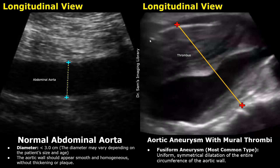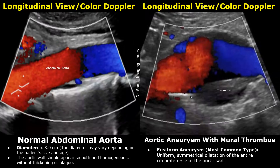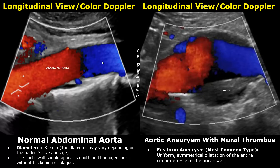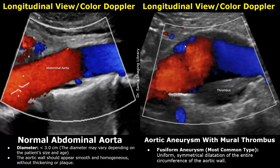This is another case of a fusiform aneurysm with a large echogenic thrombus attached to the aortic wall, narrowing the lumen. These are longitudinal images with color Doppler applied. The normal flow in the aorta is laminar — we do not see any color mixing. In the image on the right, the aorta is dilated with an echogenic thrombus seen attached to both aortic walls. There is some mixing of colors on color Doppler within the aneurysm, indicating that blood flow is disturbed and blood is not moving in one direction.